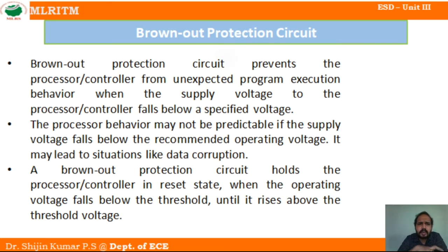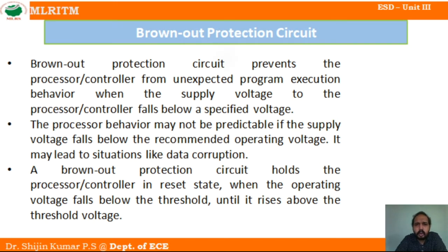In order to avoid data corruption, we use the brownout protection circuit. This circuit will hold the processor or controller in a reset state. In the reset state, all the registers and flags will become zero. If the voltage reduces below the particular range, the brownout protection circuit will act and hold the registers and memory in reset state. When sufficient power is given again, it will return to normal state, protecting from software corruption and hardware damage.